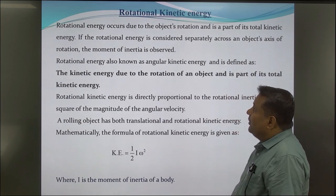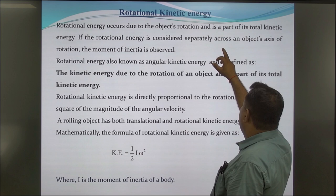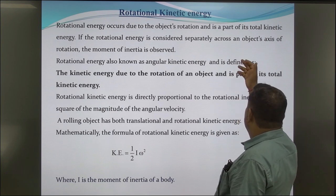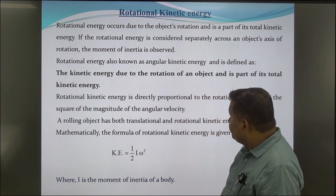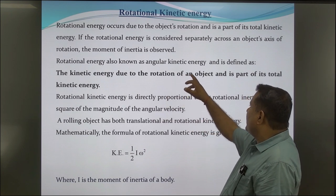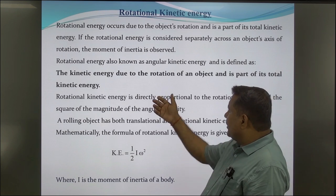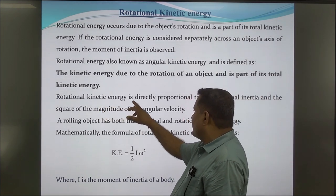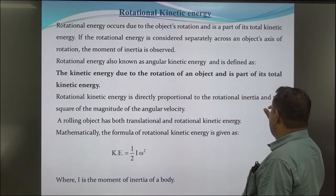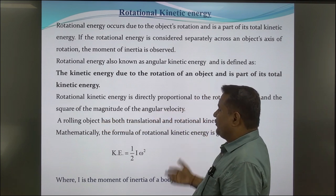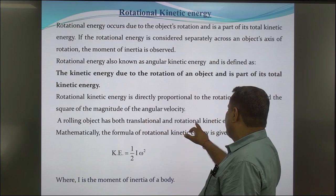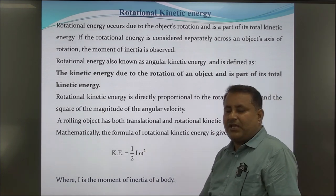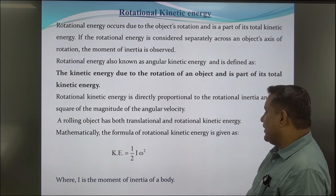Rotational kinetic energy. Rotational energy occurs due to the object's rotation and is a part of its total kinetic energy. When rotational energy is considered separately across an object's axis of rotation, the moment of inertia is observed. Rotational energy is also known as angular kinetic energy, and is defined as the kinetic energy due to the rotation of an object. Rotational kinetic energy is directly proportional to the rotational inertia and the square of the magnitude of angular velocity. A rolling object has both translational and rotational kinetic energy. Mathematically, the rotational kinetic energy is K = ½Iω², where I is the moment of inertia and ω is the angular velocity.